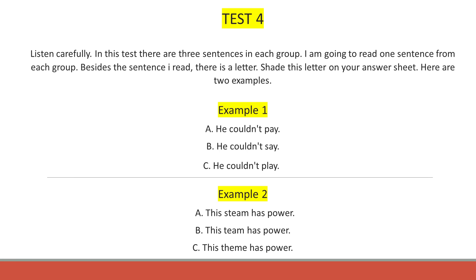Example 2. This team has power. The sentence I read was sentence A. This team has power. So the correct answer for example 2 is A. This is recorded by shading answer space A against number 2. Now get ready to answer the rest of test 4 on your answer sheet. Start at number 28.